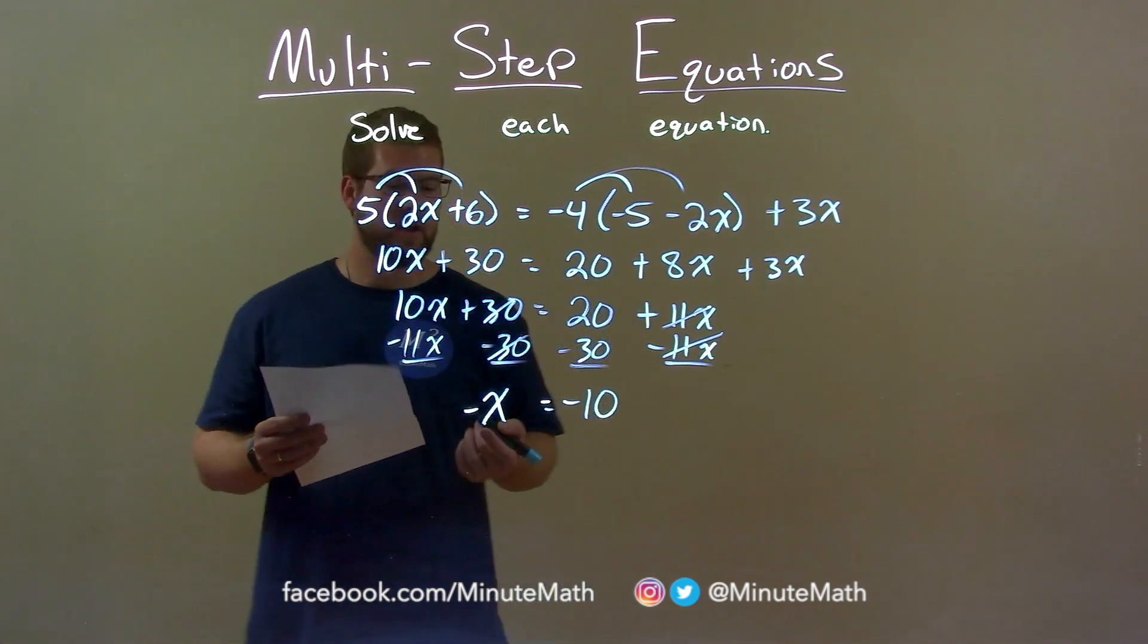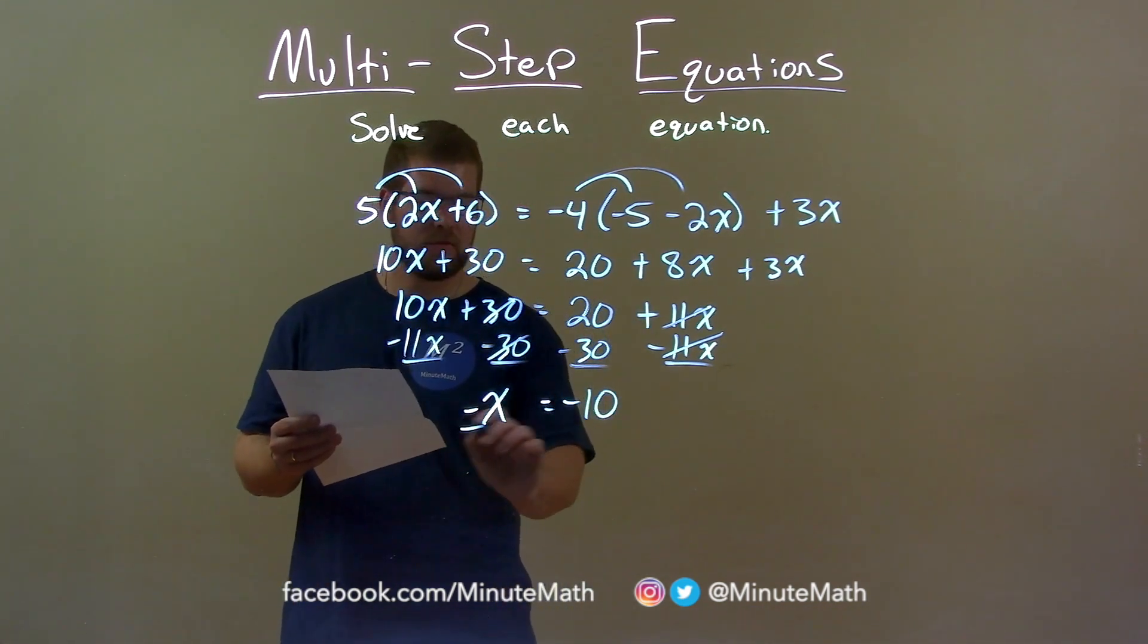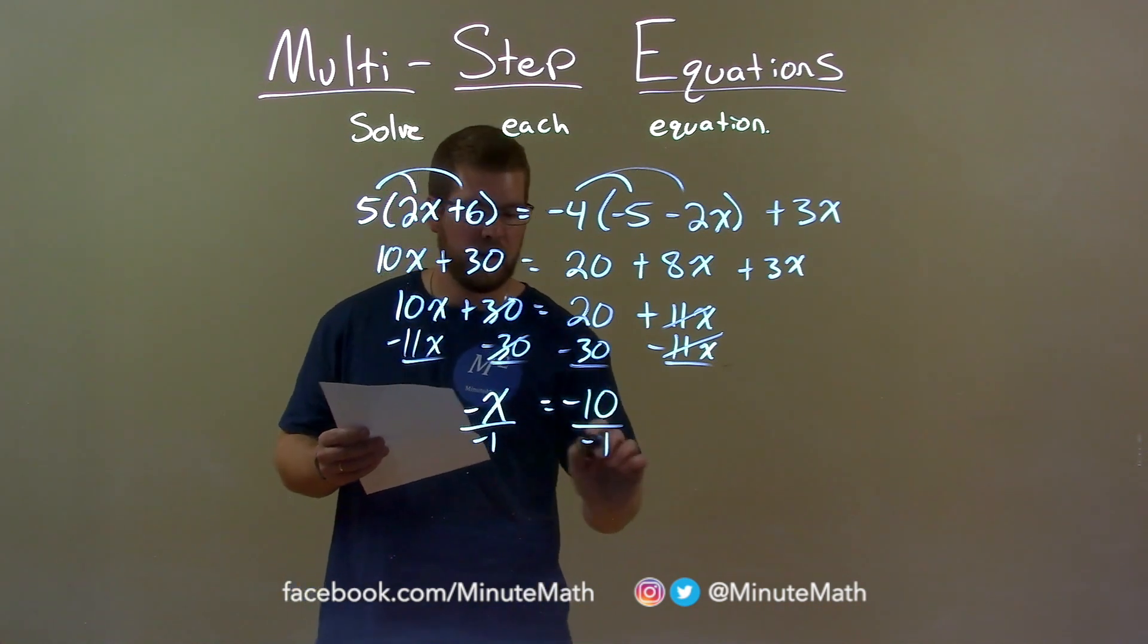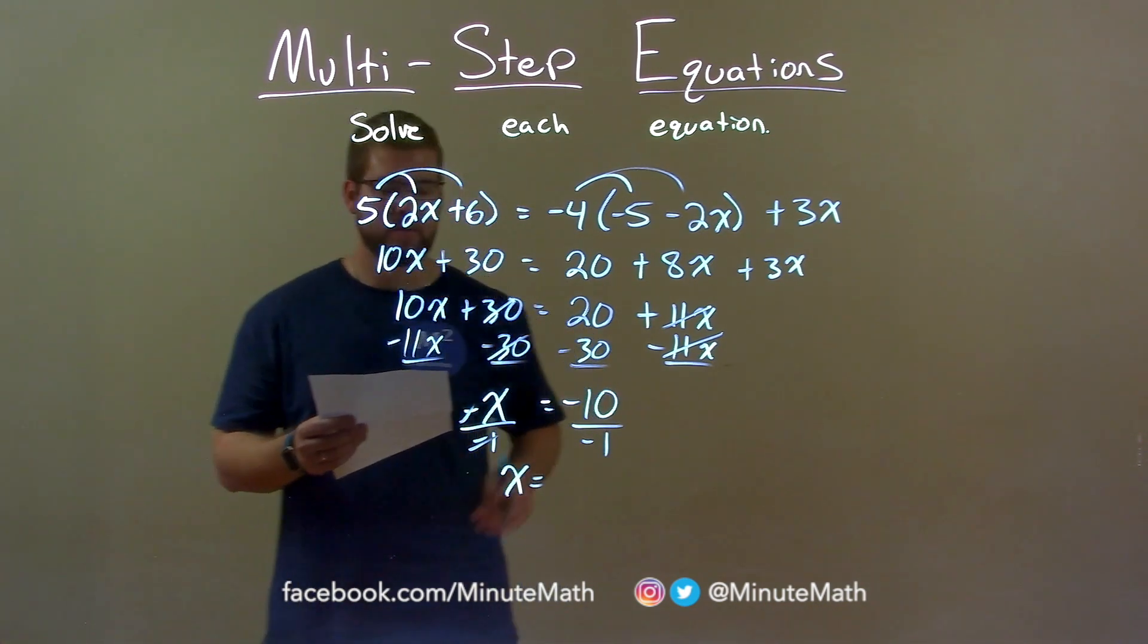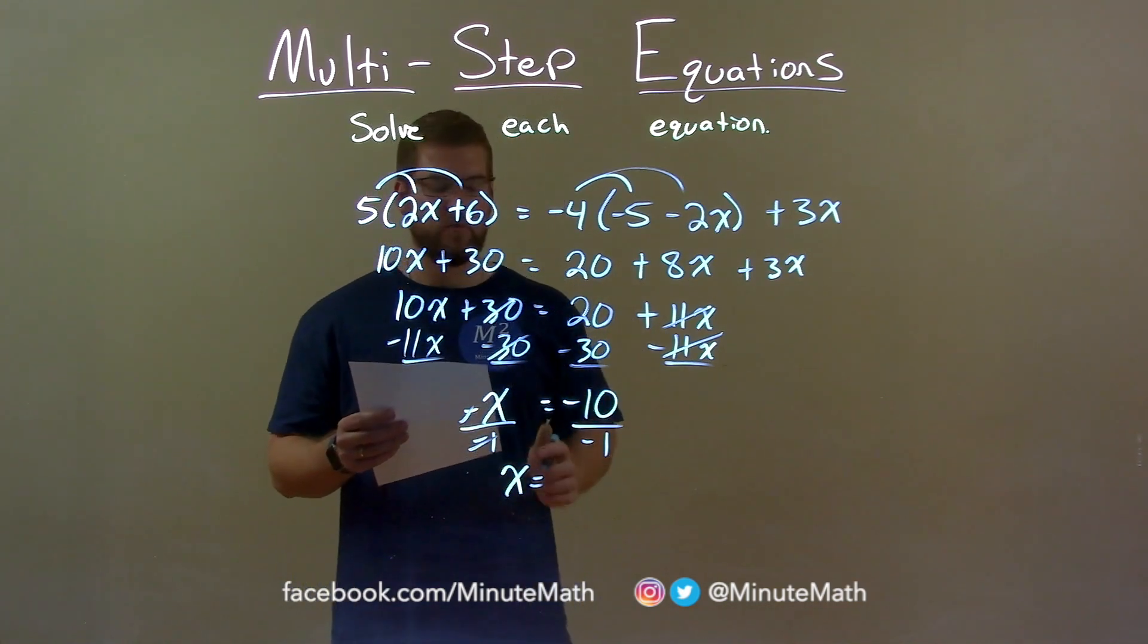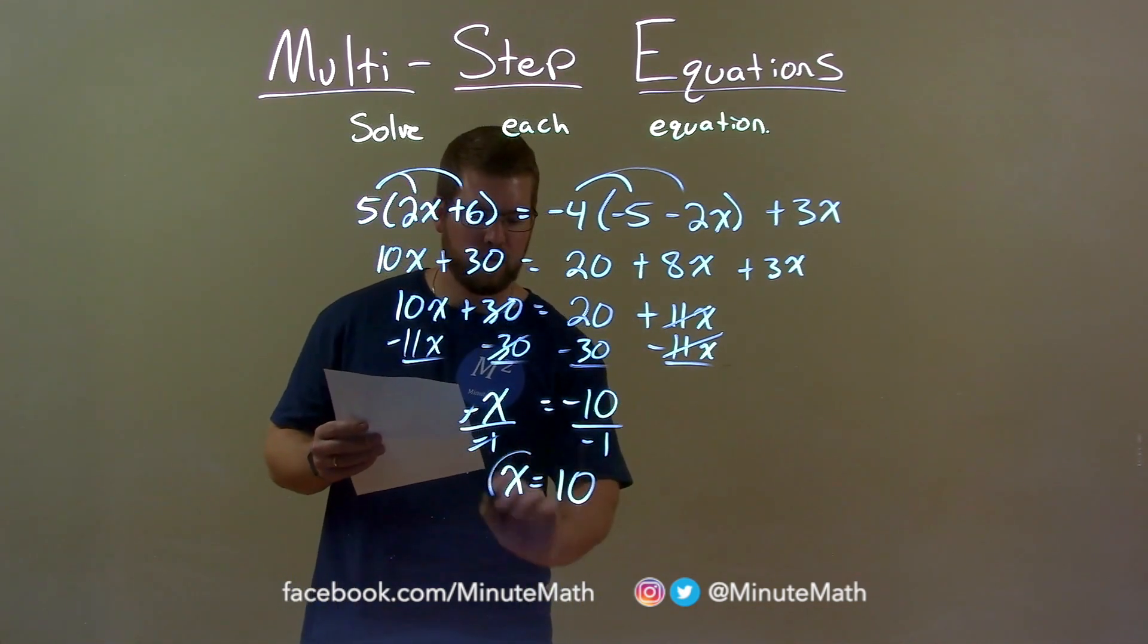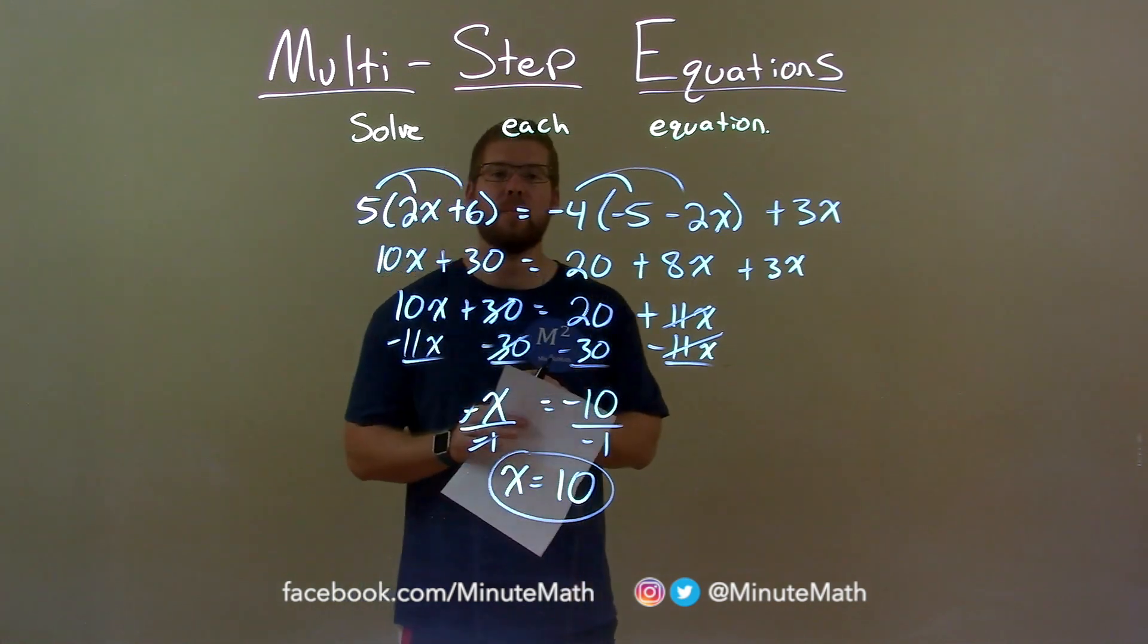Now I still want to get x by itself. There's a negative there. So if I divide both sides by negative 1, the negatives cancel, giving me a positive x by itself on the left. And negative 10 divided by negative 1 is a positive 10. And so our final answer here is x equals positive 10.